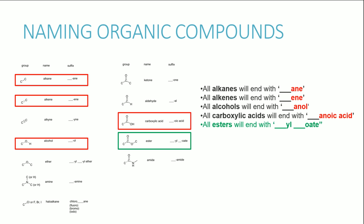The first thing we're going to be looking at is naming organic compounds. This section will make a lot more sense once you understand the individual subtopics with alkanes, alkenes, alcohols, carboxylic acids, and esters. In organic chemistry, you find substances that have certain functional groups, and functional groups are basically groups of atoms responsible for the characteristic reactions of a particular compound.